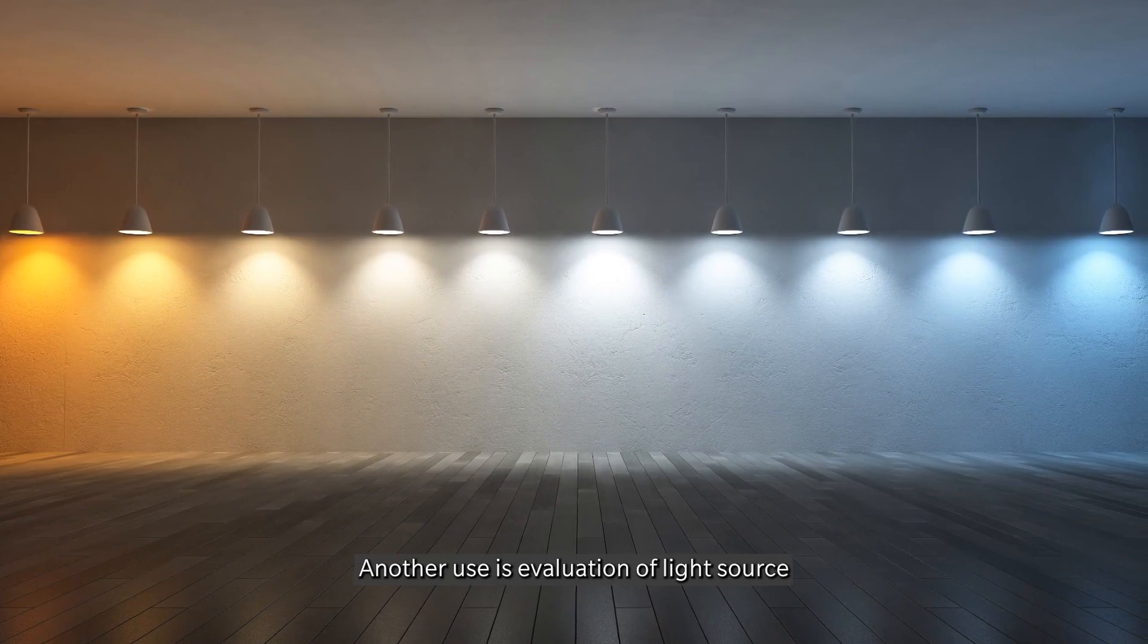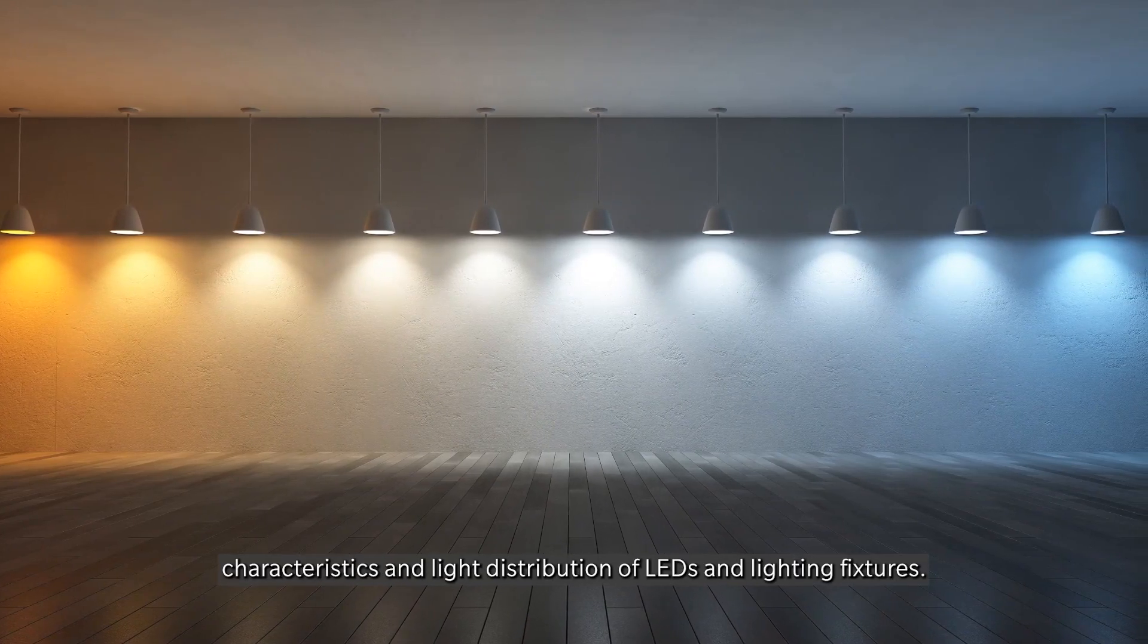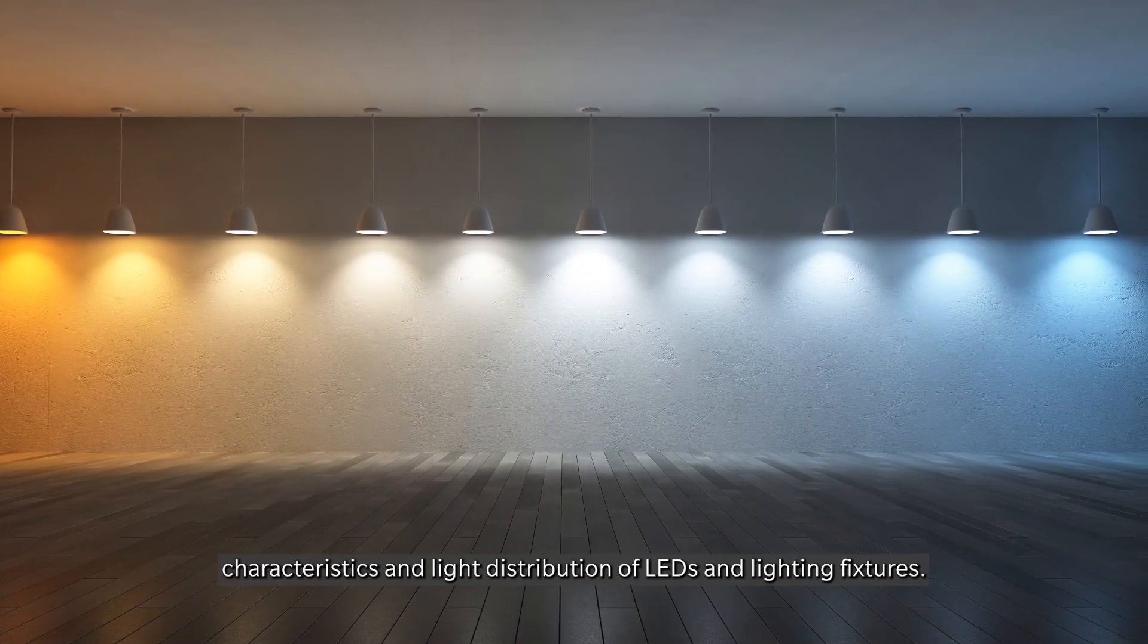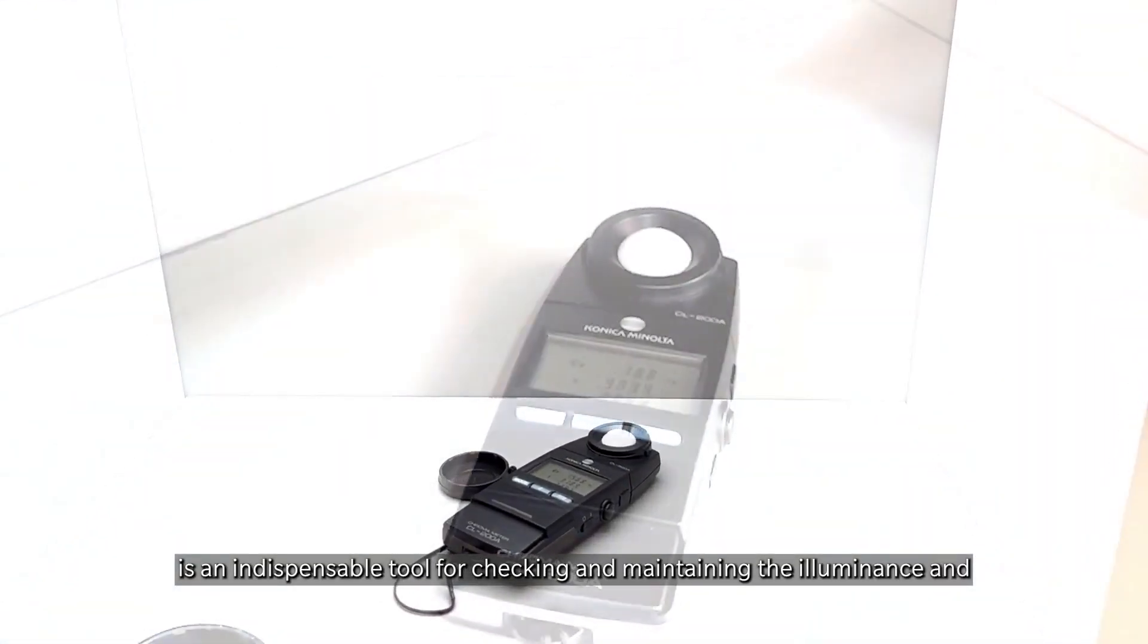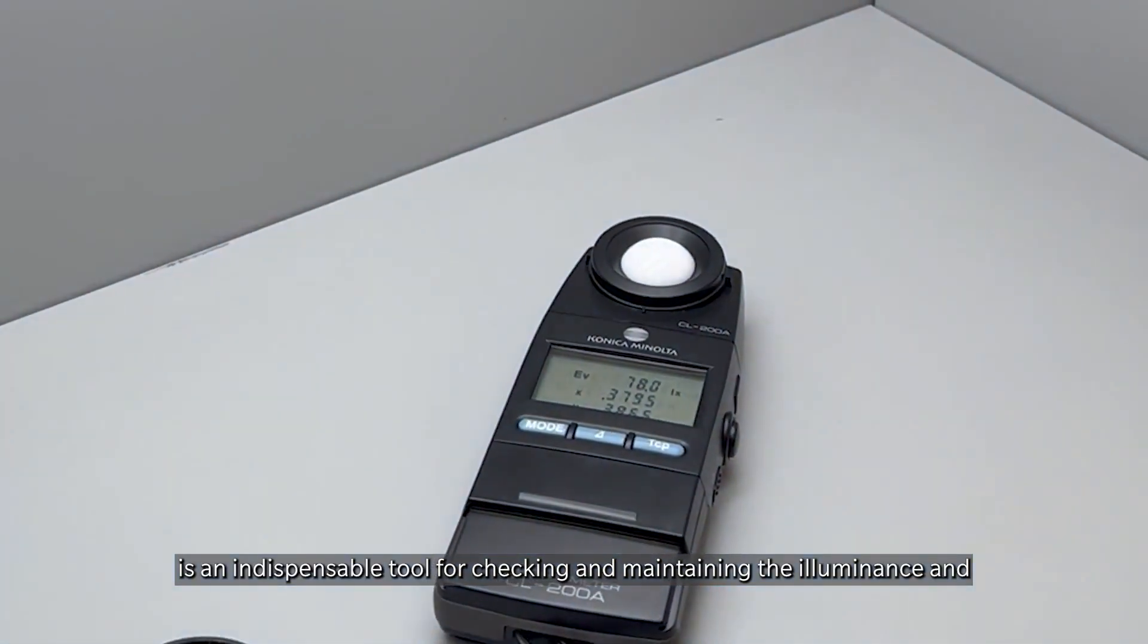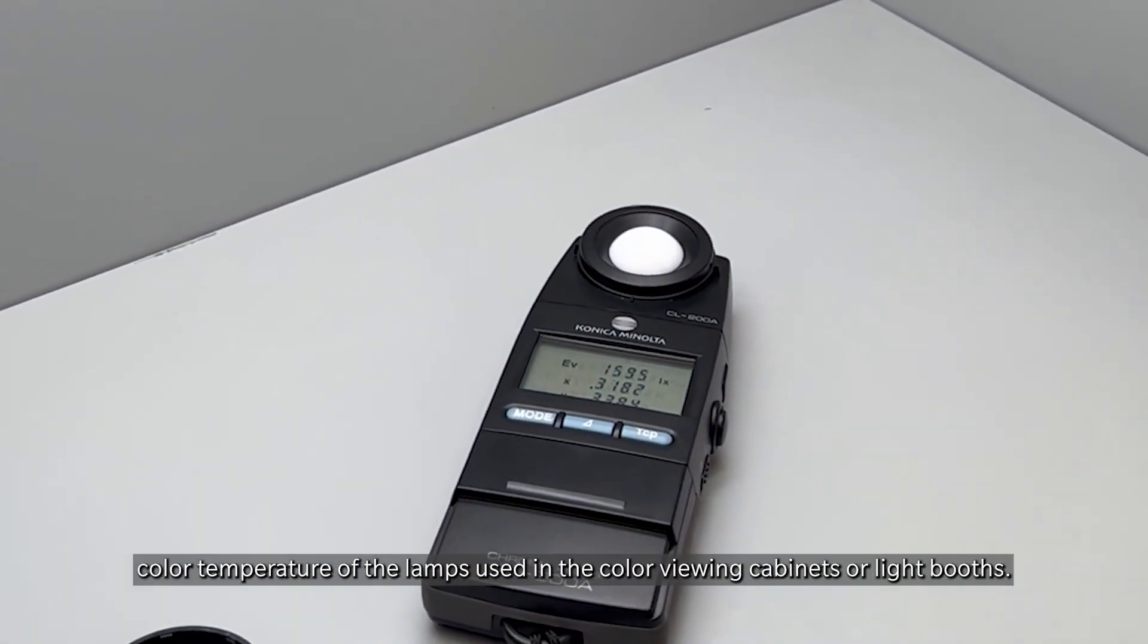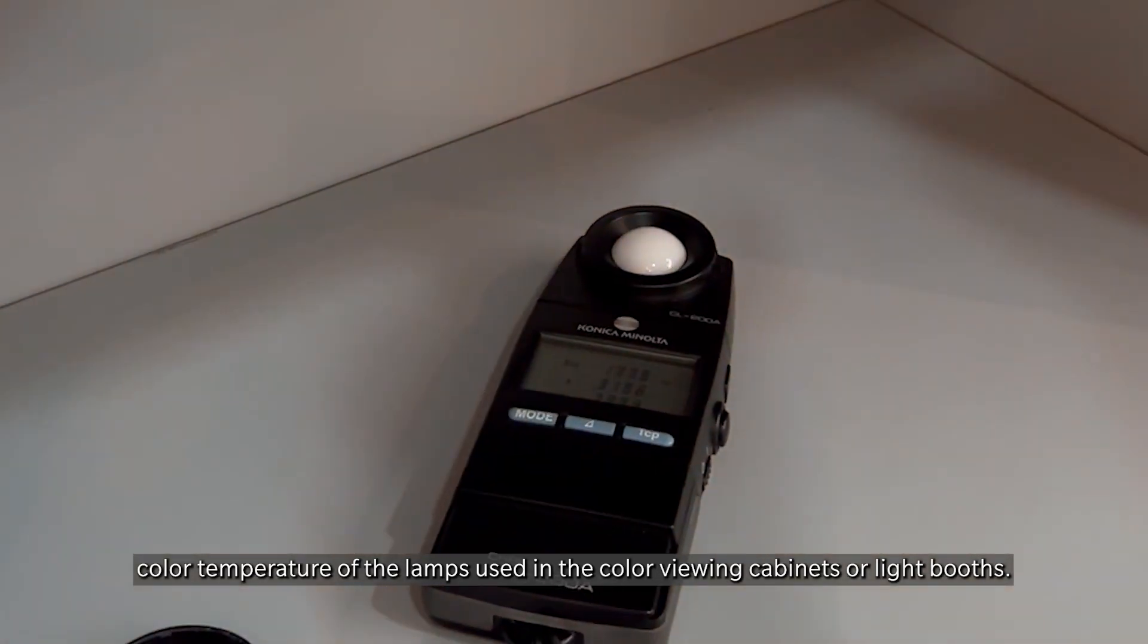Another use is evaluation of light source characteristics and light distribution of LEDs and lighting fixtures. Additionally, the CL200A is an indispensable tool for checking and maintaining the illuminance and color temperature of the lamps used in color viewing cabinets or light booths.